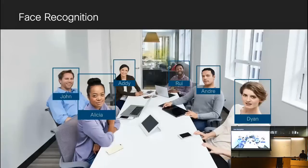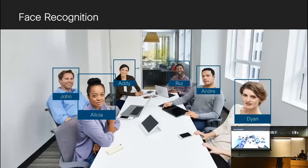We also have models for face recognition, which is slightly different from face detection. In addition to detecting faces, it also classifies those faces and assigns a name label to each one. It can do a lookup against a trained set of person names from the company directory and assign a name to all the faces detected in the meeting.